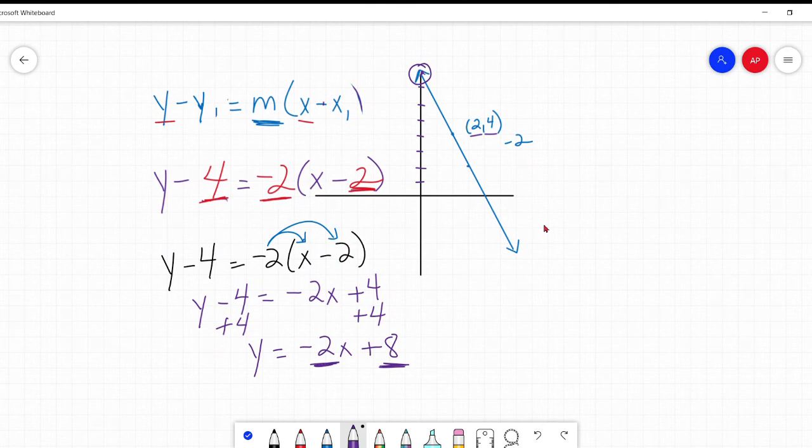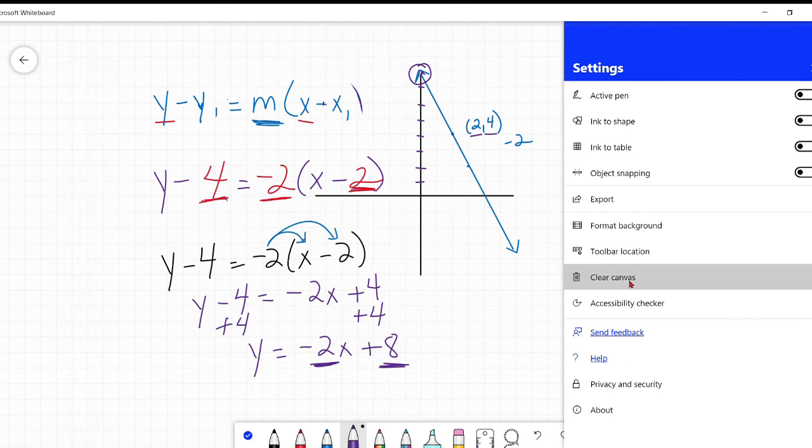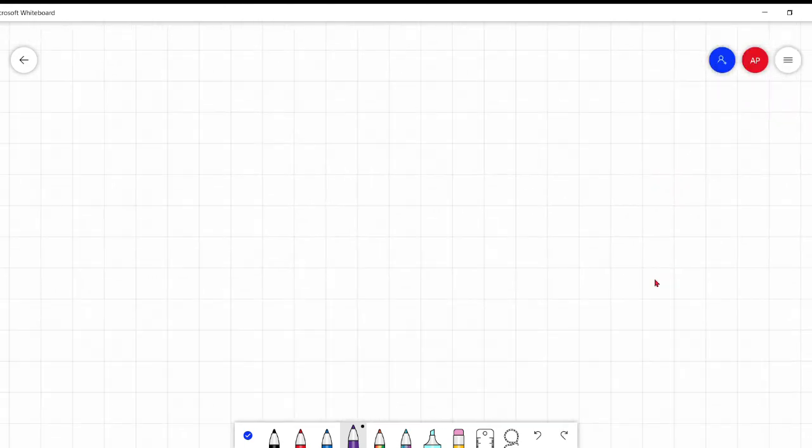So what are the advantages of the point slope form? Just what we're saying here that I don't have the y intercept. All I have is a point and I have the slope. I can still write the equation of that line. As simple as that.